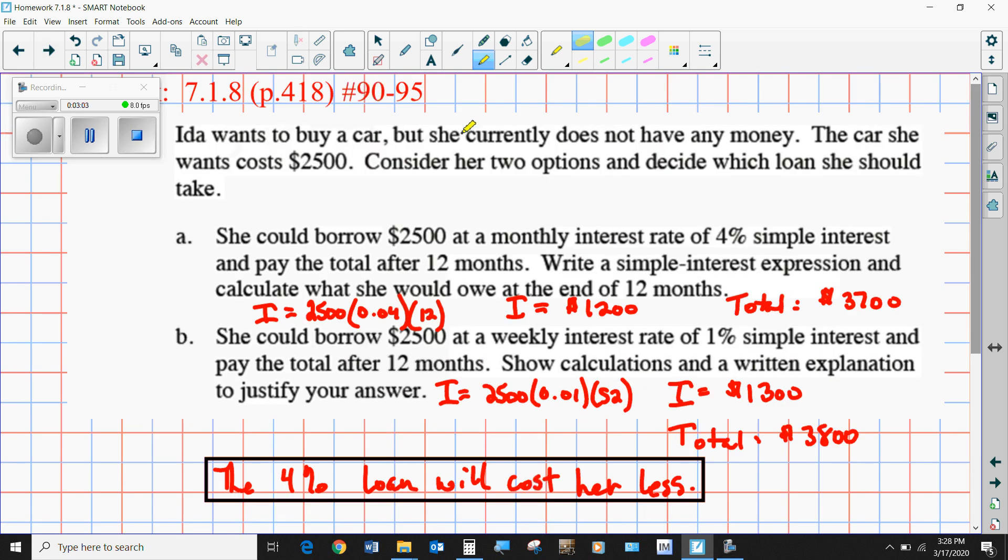Alright, so Ida wants to buy a car, but she currently does not have enough money. The car she wants costs $2,500, so that will be the principal. She could borrow the $2,500 at 4%, so we're going to change that to its decimal equivalent, and pay the total after 12 months. Is this a monthly interest rate? Yes, it's a monthly interest rate, so the 12 months would go here. Now you just multiply those three numbers together. Turns out that is $1,200. That's a high interest rate per month—you're paying a lot of money back after one year.